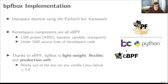In userspace, BPFbox runs as a privileged daemon that leverages the BCC framework for Python to compile and load its BPF programs into the kernel. All of BPFbox's kernel space components are written in eBPF and utilize several classes of BPF programs, such as LSM probes for policy enforcement, kprobes for tracking kernel space state, and uprobes for tracking user space state. In total, BPFbox consists of under 2,000 lines of kernel space code. Thanks to eBPF, BPFbox's implementation is lightweight, flexible, and production safe, and it works out of the box in any vanilla Linux kernel version 5.8 or higher.